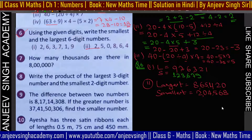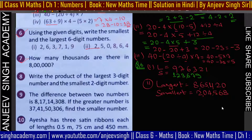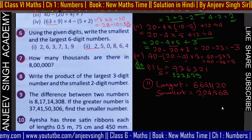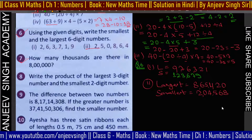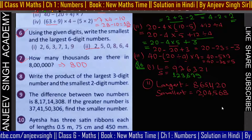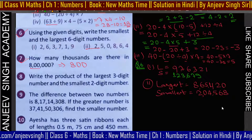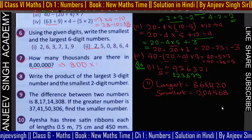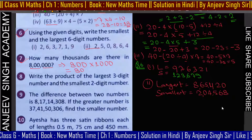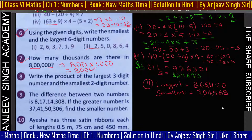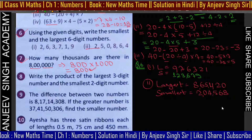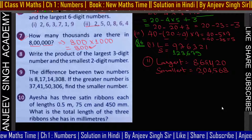Question number 7: 8 lakh में total कितने thousand हैं? 8 lakh = 800,000। तो 800 × 1000 = 800 thousand। Answer: 800 thousands। Next: largest 3-digit number और smallest 2-digit number का product निकालना है।